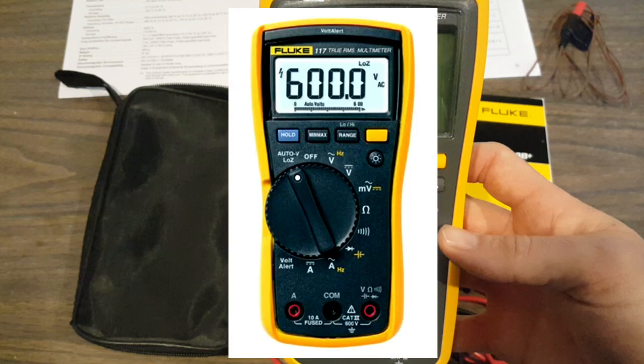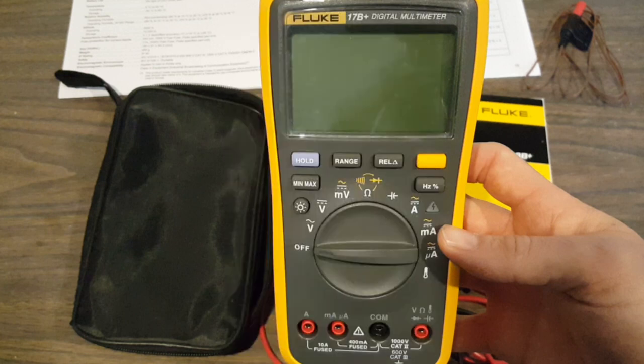One of the common counterparts is the Fluke 117, which is advertised as an electrician's meter. Now, there's a problem with this one. The main problem is it doesn't have a milliamp range. And, of course, as hobbyists, we almost always deal in very small currents. We don't deal in large current measurements, so having a milliamp range is indispensable. That, for me, made the 117 a bad choice.